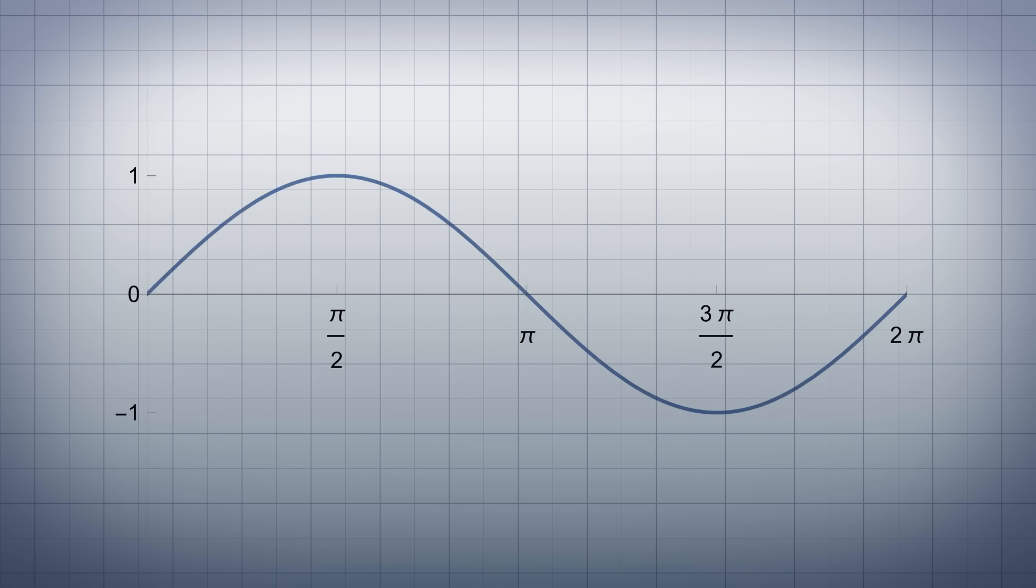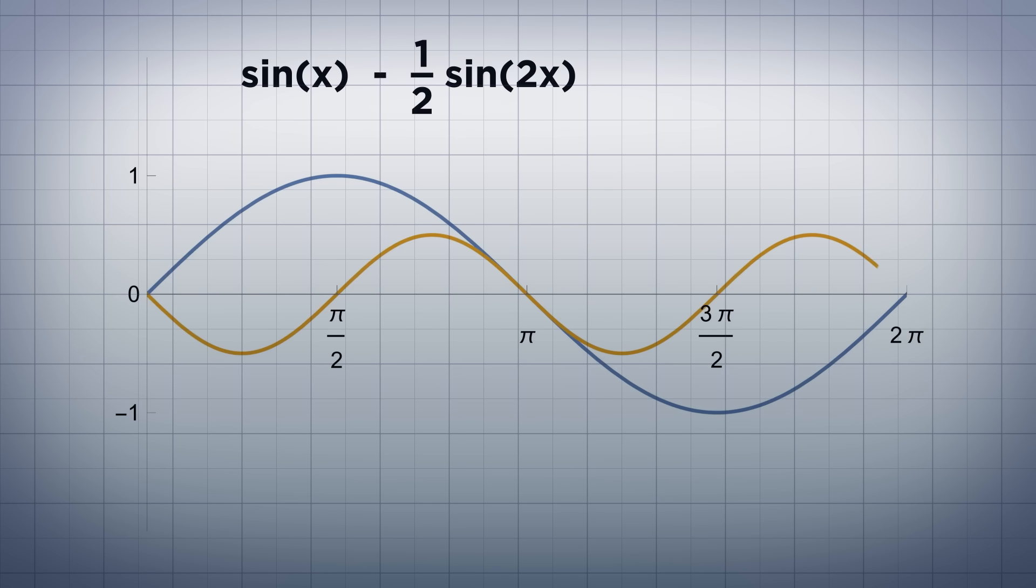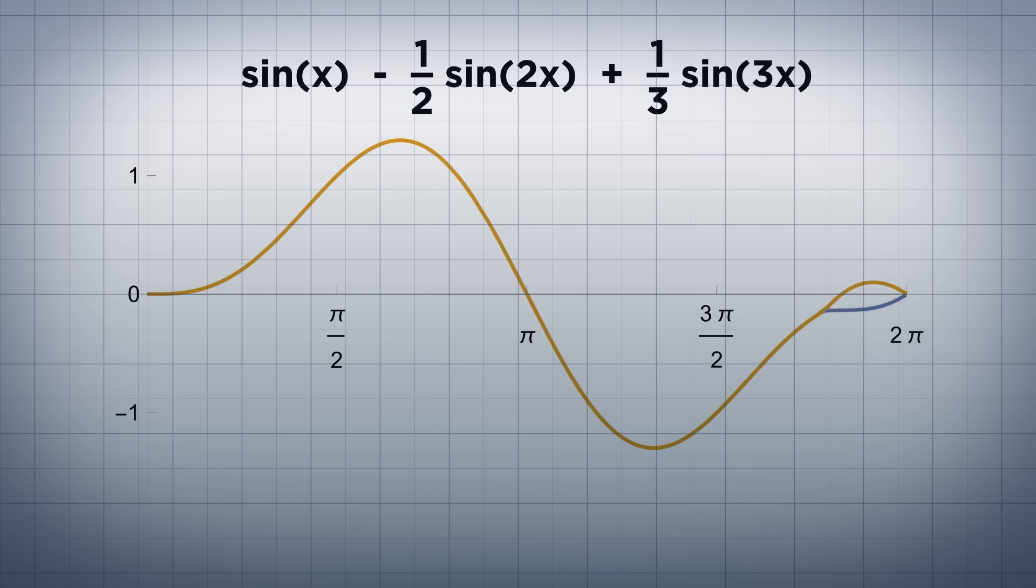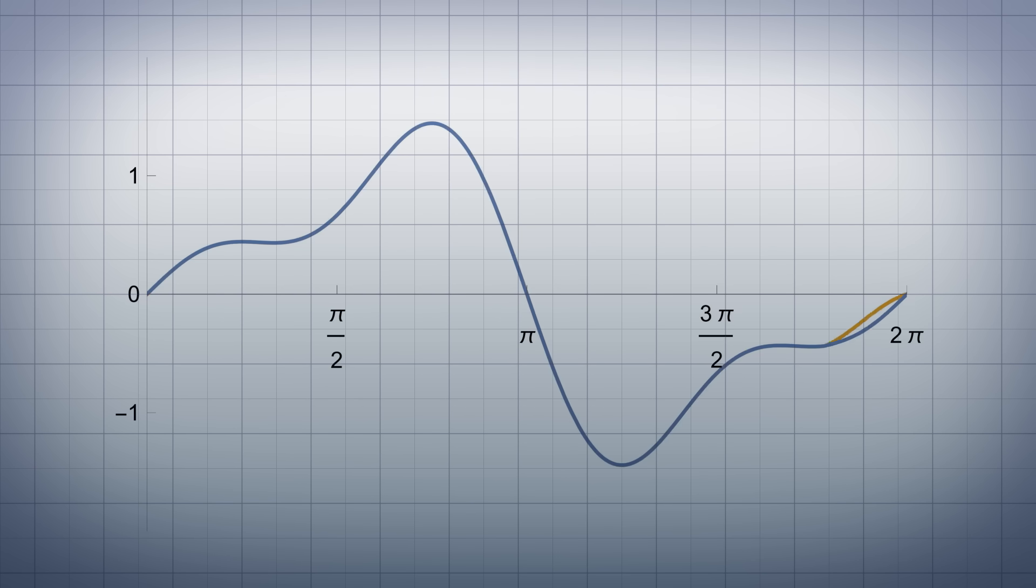Another example is the Fourier series of a sawtooth wave. The first few terms are sine x minus half sine 2x plus one-third sine 3x. When we keep adding terms, we can see the sawtooth wave taking form.